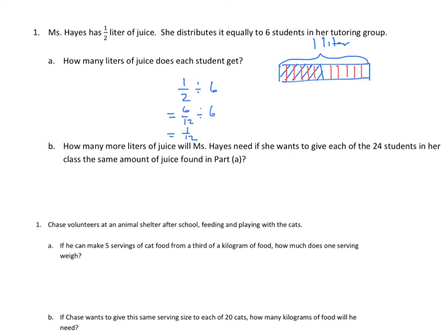In the second part, how many more liters of juice will Ms. Hayes need? She wants to give each of her 24 students in her class the same amount of juice as found in part A. I'm going to presume that how much more than what she had here, which was my half liter. So we know that each student gets one twelfth of a liter. So one unit equals one twelfth of a liter. I need 24 units. 24 units equals one twelfth times 24.